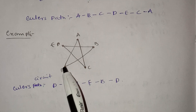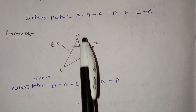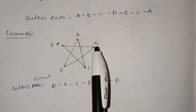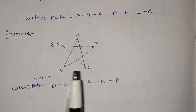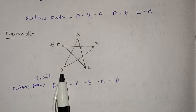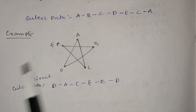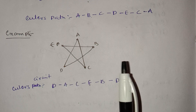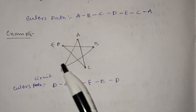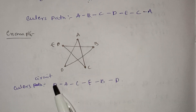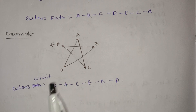Here is the Euler circuit example — it is also a closed walk. The vertices are: A is one vertex, B is one vertex, C is one vertex, D is one vertex, and E is one vertex. The circuit follows the same rule: the starting and ending vertex must be the same.